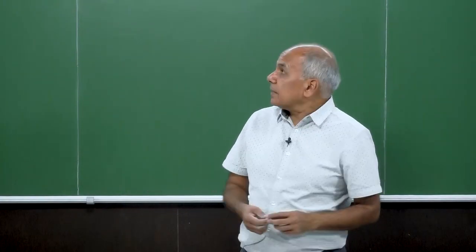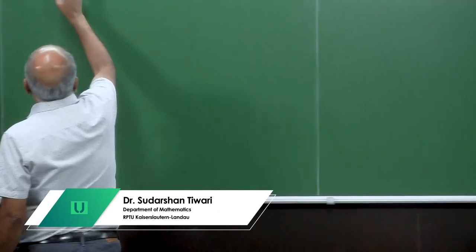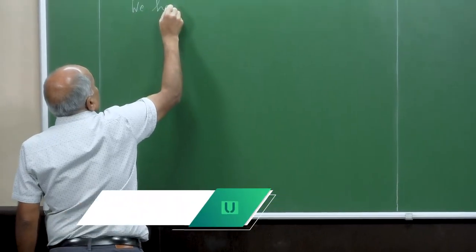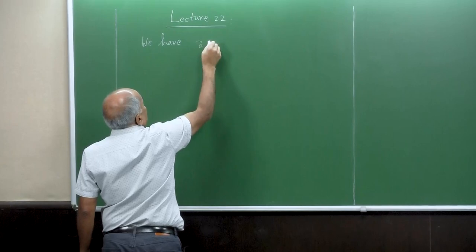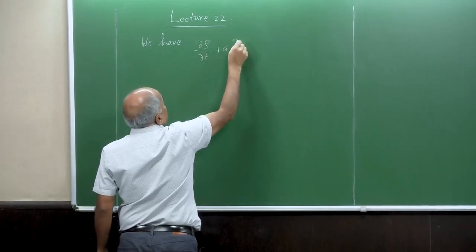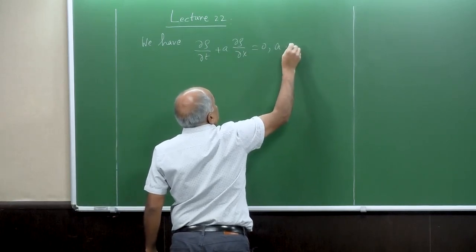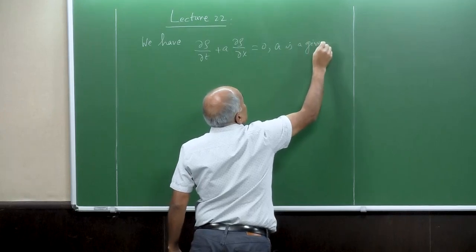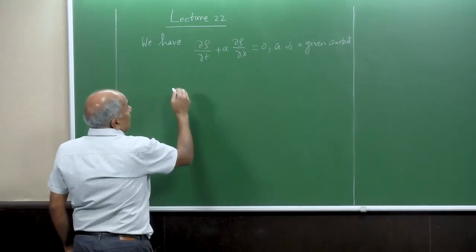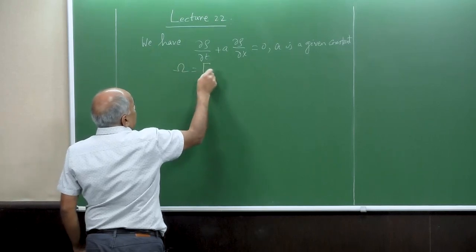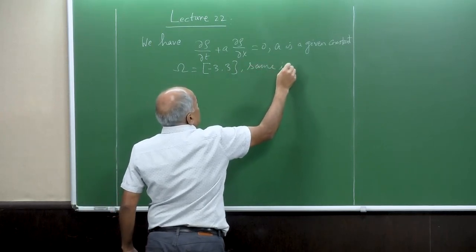Welcome back to the next lecture. This is a continuation of the earlier lecture. We have considered the linear advection equation: del rho by del t plus a del rho by del x equals 0, where a is a given constant. The domain was minus 3 to 3, with the same initial condition.